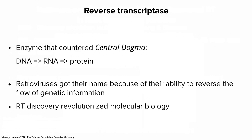Reverse transcriptase is the enzyme that countered the central dogma, which Francis Crick set forth shortly after figuring out the DNA structure — that DNA goes to RNA goes to protein. If you look at interviews with Crick, he later said 'I never said that,' but he did. Reverse transcriptase reversed it — that's why it's called reverse transcriptase. And that's why they're called retroviruses: because they reverse the flow of genetic information.